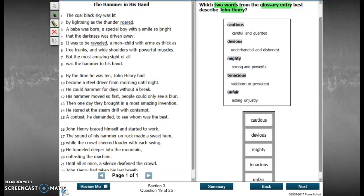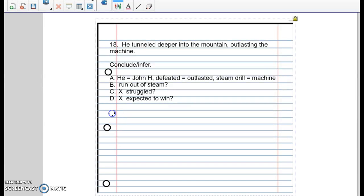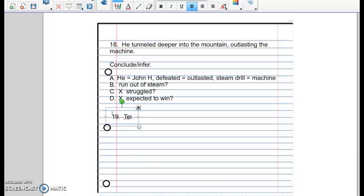So again, we're working on using our notebook paper. This is number 19. This is a TEI. And it basically asks you to describe John Henry.